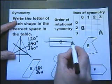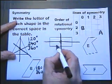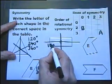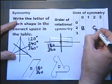The rectangle's got 2 lines of symmetry, 2 lines of reflectional symmetry, and it's got rotational symmetry order 2, because there are 2 angles you can rotate it through, and it will fit in its own space. So, the C is going to go in there.